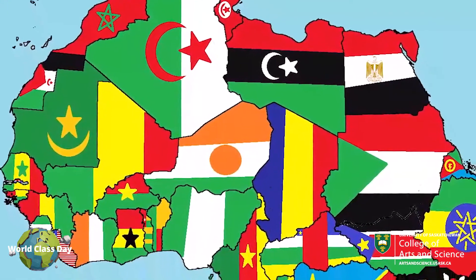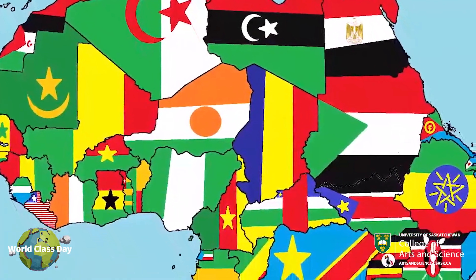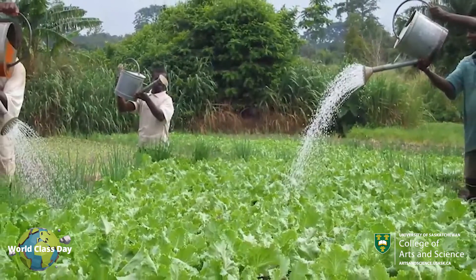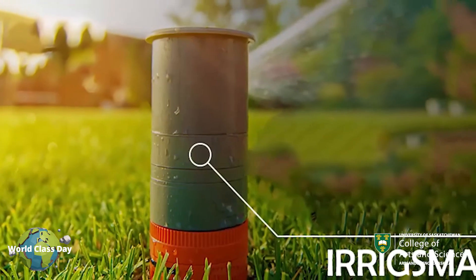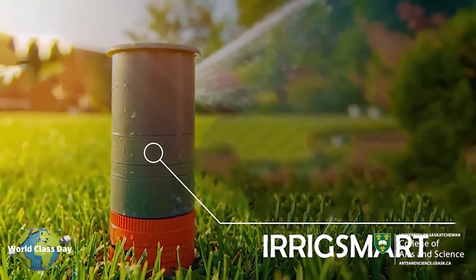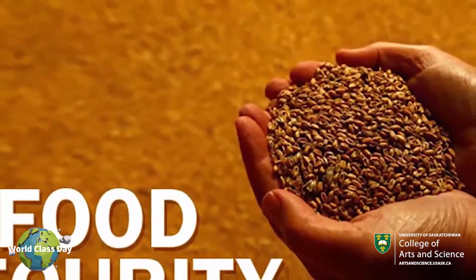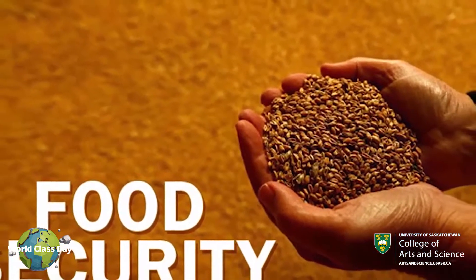In many parts of Africa, even when irrigation is practiced, it is manually operated. Smart irrigation system is thereby believed to be a major solution in the area of food security in Nigeria and the world at large.